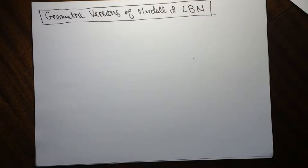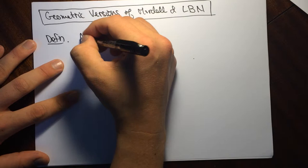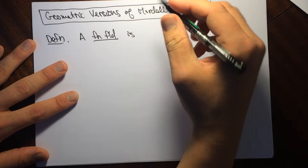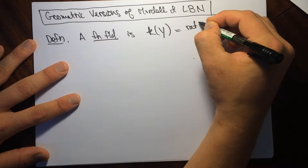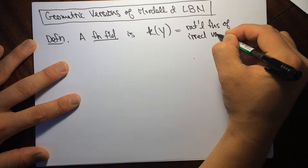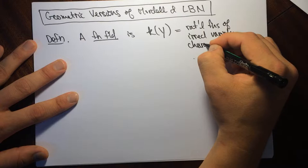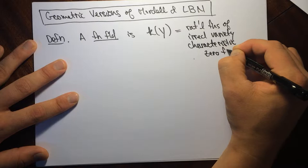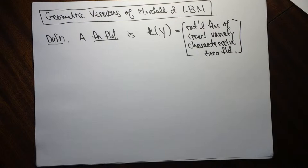In order to formulate this, I need to give you a definition of what a function field is. A function field for me is the field of rational functions of an irreducible variety over a characteristic zero field. There are also analogs for positive characteristic, but in this video I just want to stick to characteristic zero.